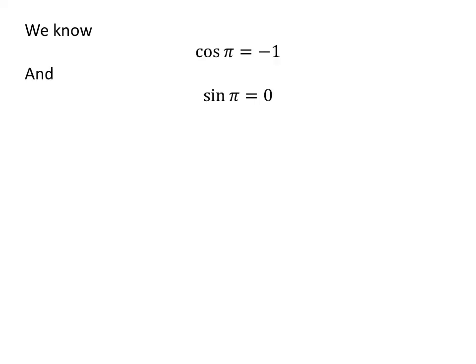We know cosine of π is minus 1 and sine of π is 0. The polar form of complex number minus 3 is 3 times cosine of π plus i times sine of π.